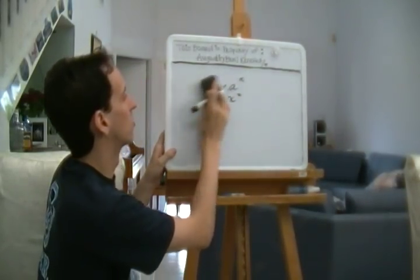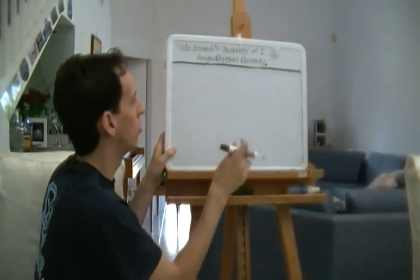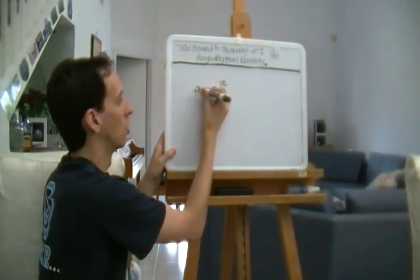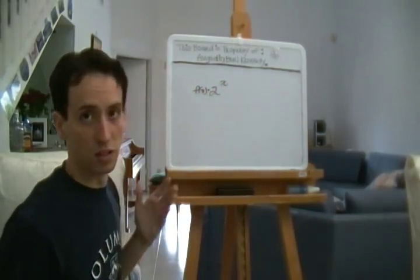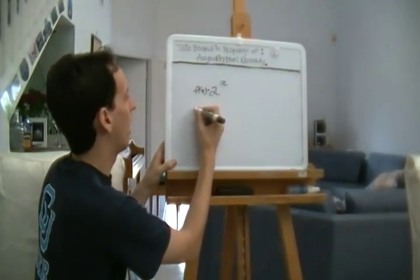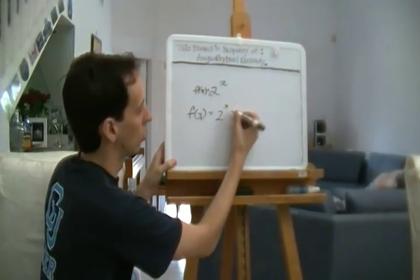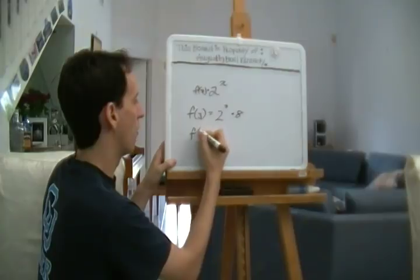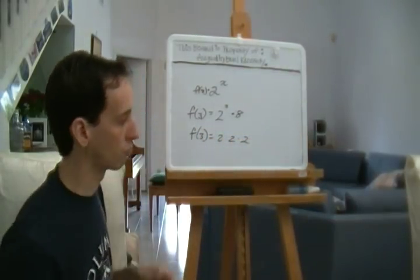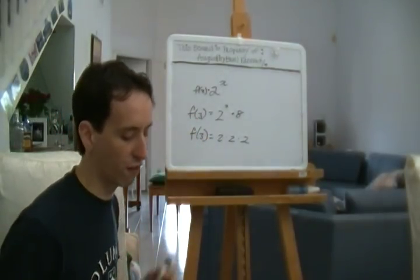f of x equals a to the x. You might, if you're familiar with computers at all, you might be very familiar with powers of 2. 2 to the x. f of x equals 2 to the x. And what that's basically saying is that if we have f of 3, that's 2 cubed, which is 8, or f of 3 equals 2 times 2 times 2. That's an idea of what an exponential function is.